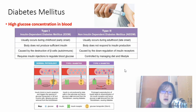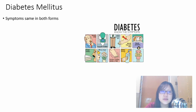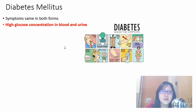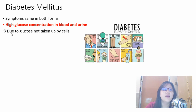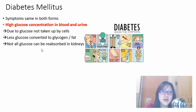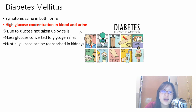Regardless of type, the symptoms of diabetes mellitus are the same. There is a high concentration of glucose in both the blood and the urine. This is because glucose is not taken up by cells, less glucose is converted to glycogen or fat, and not all glucose can be reabsorbed in the kidneys, resulting in high glucose concentration in the urine.